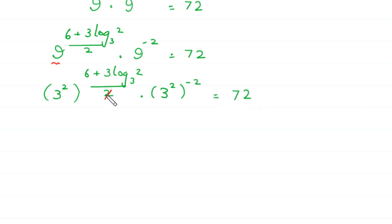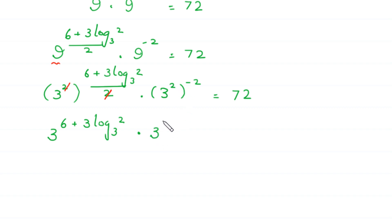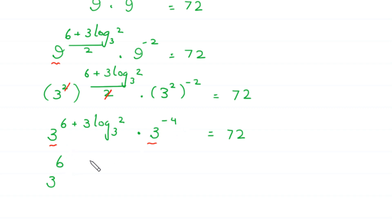Now, these 2s will be cancelled out, and here we are left with 3 to the power (6 plus 3 times log base 3 of 2) times 3 to the power (2 times negative 2), which is negative 4, is equal to 72. Now we have the same base 3 and same base 3, so we add these powers: 3 to the power (6 minus 4 plus 3 times log base 3 of 2) is equal to 72.